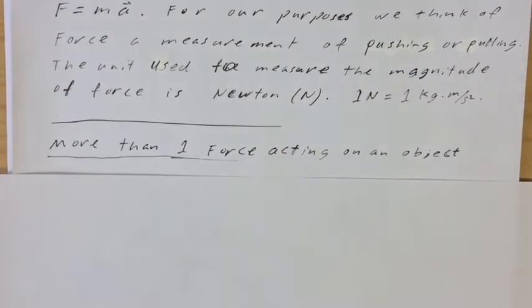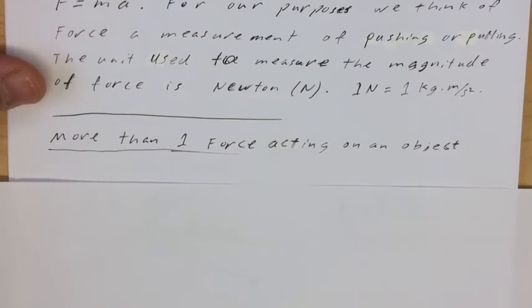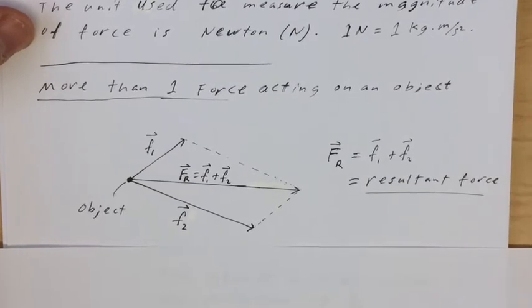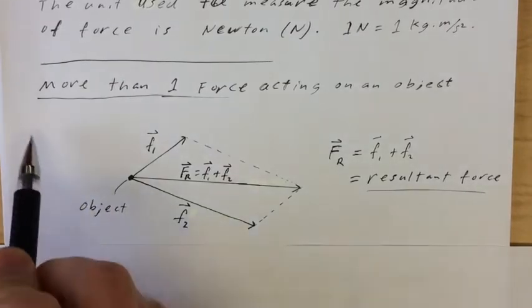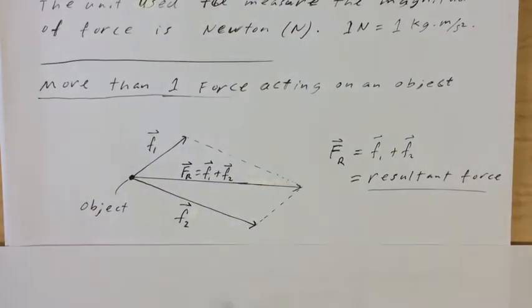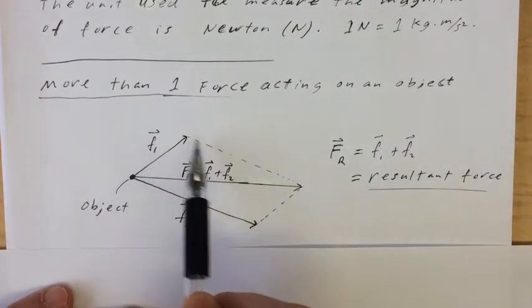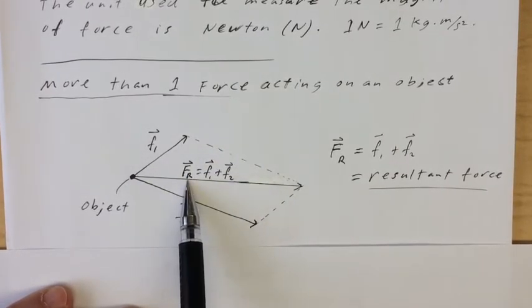Now we're going to look at more than one force acting on an object. If we take two forces pulling on an object, it ends up being just vector addition. I like to write them as pulling on an object, because then I can use the parallelogram law to add the vectors. And if you add these two vectors, you get resultant vector FR, so F1 plus F2 equals FR.